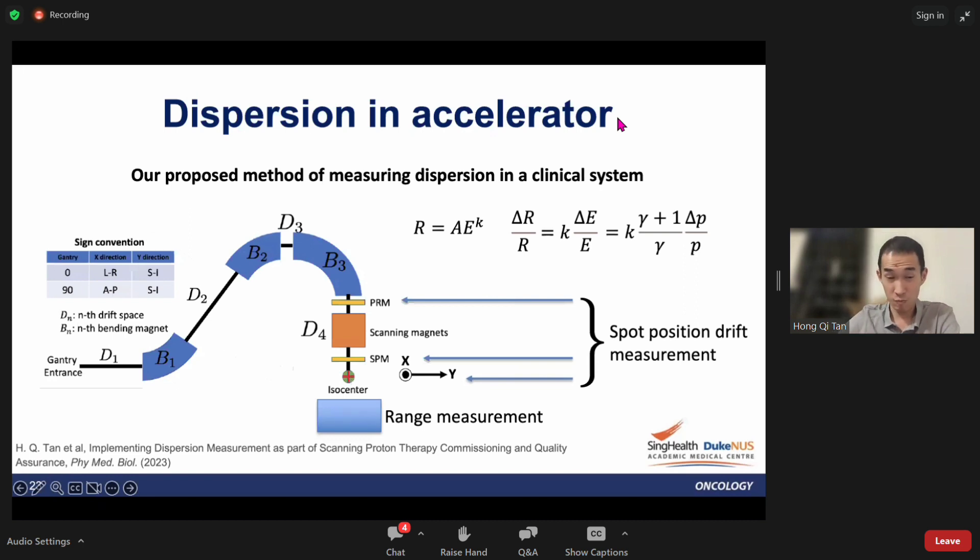As mentioned earlier, if this is a drift space, which it is because there is no scanning and the transfer is only directed at the ISO center, then the dispersion at PRM, SPM, and ISO center should align along a straight line.